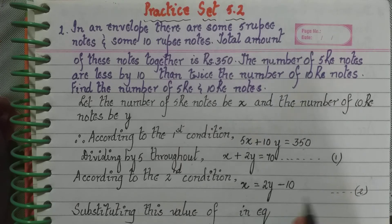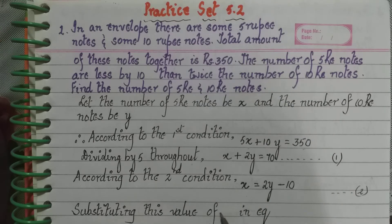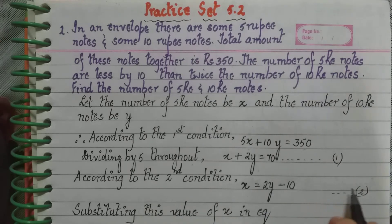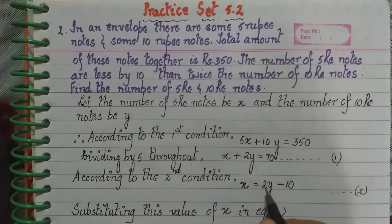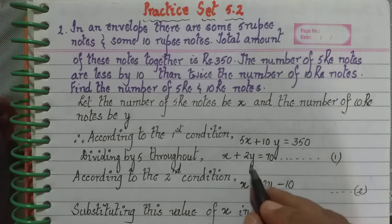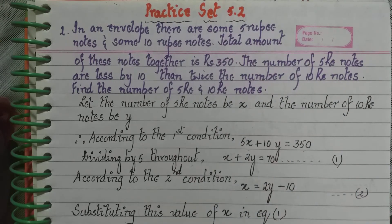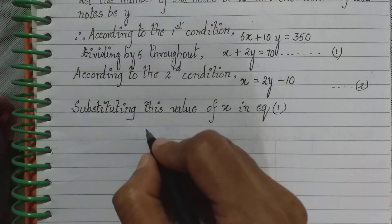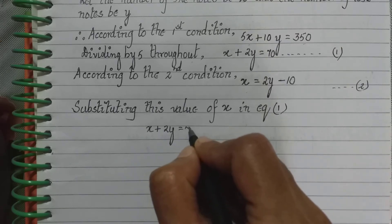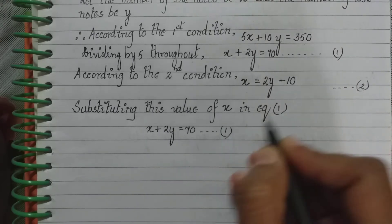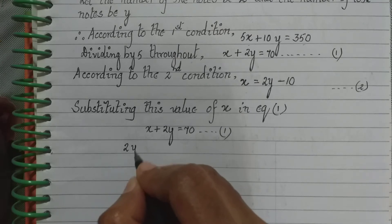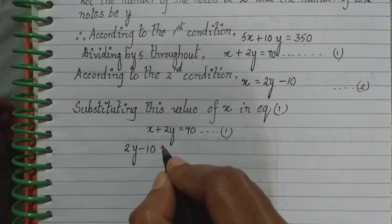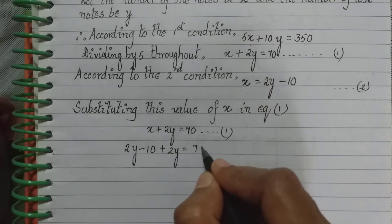In the second equation we have directly got what X is, so we can substitute this value of X into Equation 1. Equation 1 is X + 2Y = 70. Substituting X = 2Y − 10 in place of X, we get: (2Y − 10) + 2Y = 70.